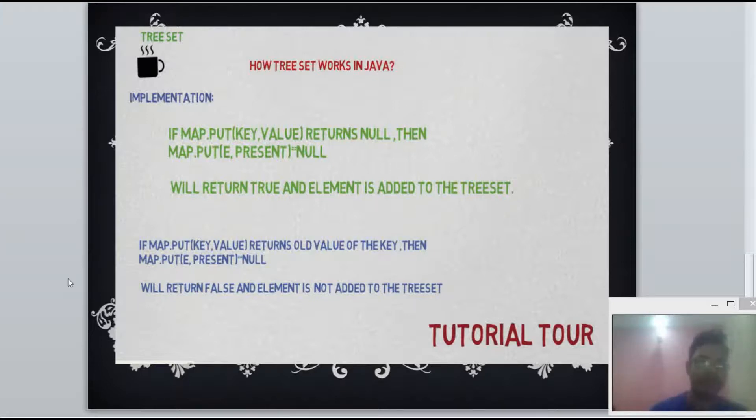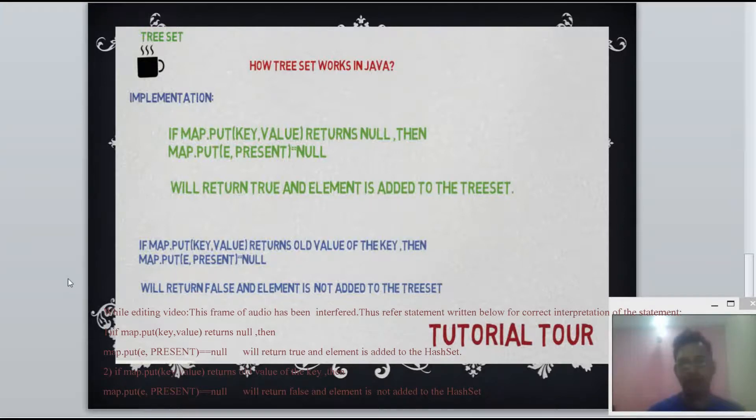If map.put returns null, then new element will be added to TreeSet. In that case, add method will return true.